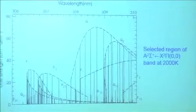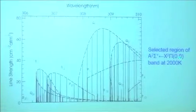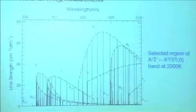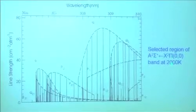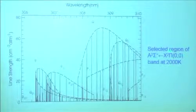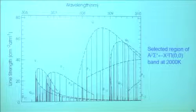This is the zero-zero band — V'' and V' are both zero — at 2000 degrees, in this system. These are all the lines that are significant with their notation.